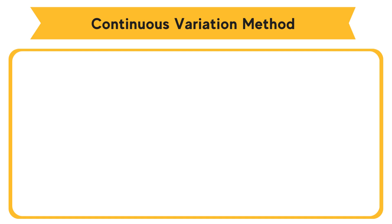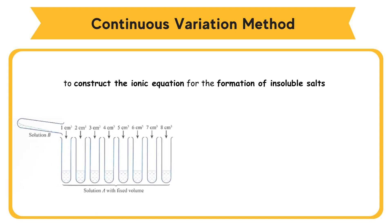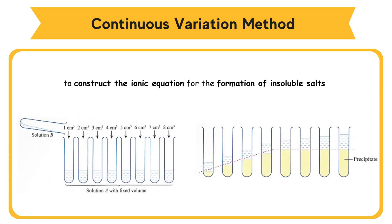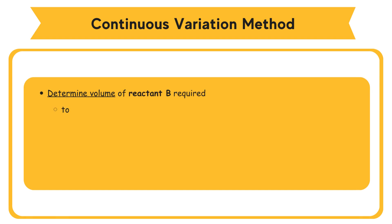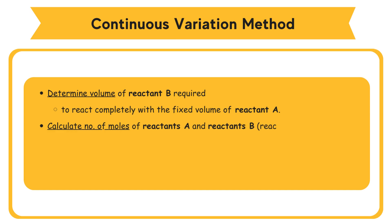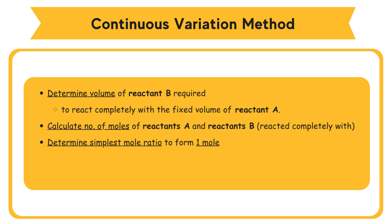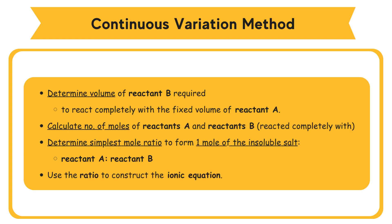Constructing ionic equations using the continuous variation method. The continuous variation method is used to construct the ionic equation for the formation of insoluble salts. The volume of one solution A is fixed, while solution B is added by increasing the volume. The height of the precipitate increases gradually for the first few tubes and then becomes constant. The first test tube that achieves the maximum height of the precipitate indicates that all reactants have completely reacted with one another. Determine the volume of reactant B required to react completely with a fixed volume of reactant A. Use the results to calculate the number of moles of reactants A and B which reacted completely. Determine the simplest mole ratio of reactant A to reactant B which combined to form one mole of the insoluble salt. Use the ratio to construct the ionic equation.